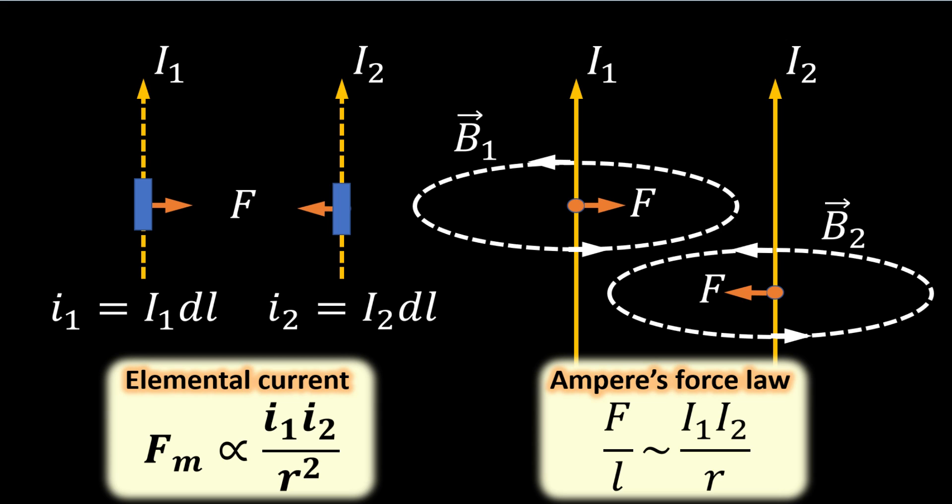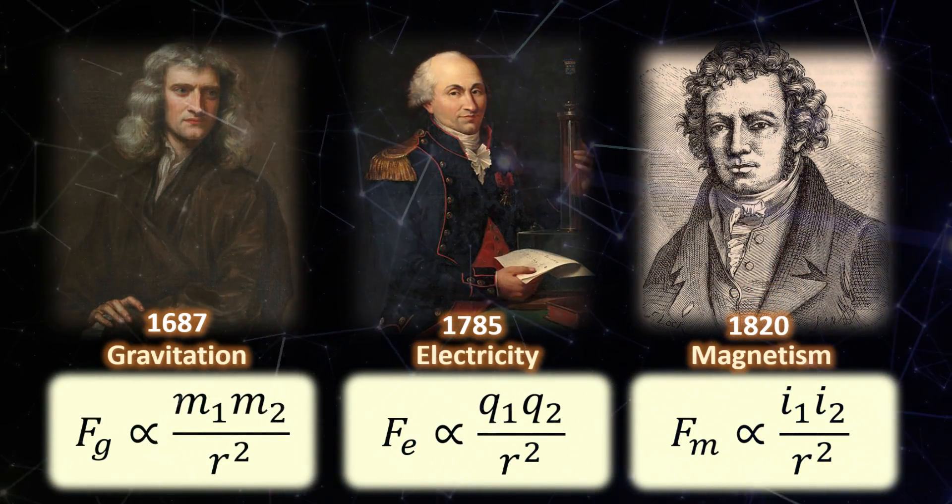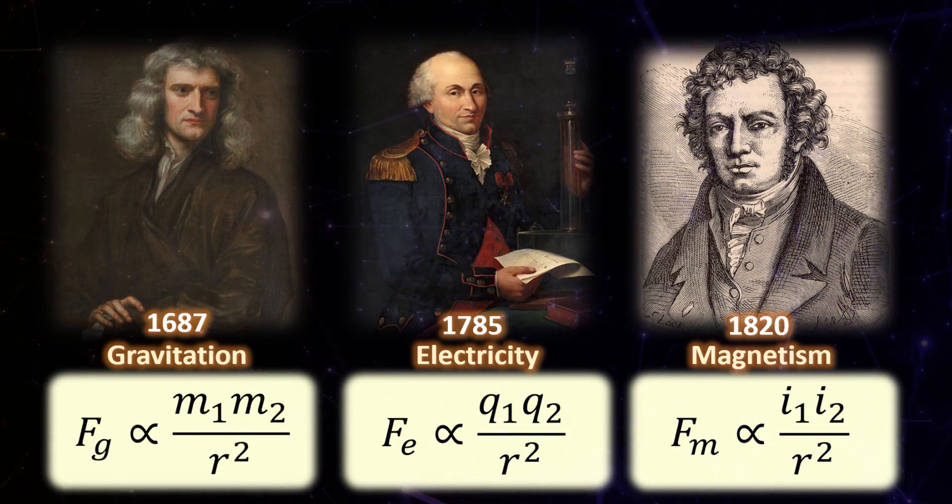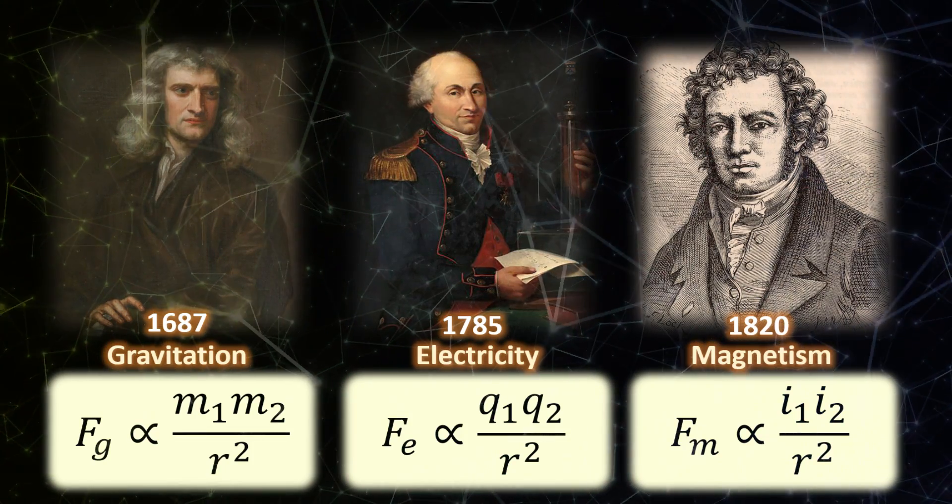He showed mathematically that the forces between these parallel current elements indeed exert a force that goes inversely with the square of their distance. It all looked so right—now the forces between elemental currents are analogous to that of electrical and gravitational forces, all proportional to the inverse of their distance squared.